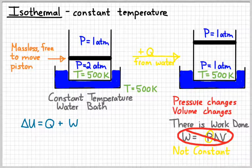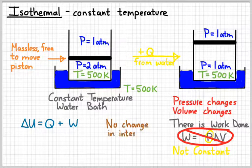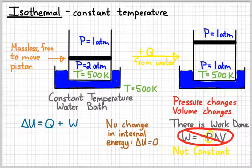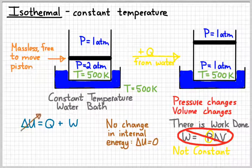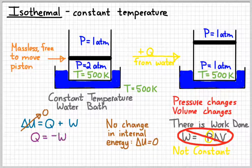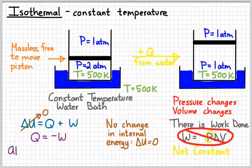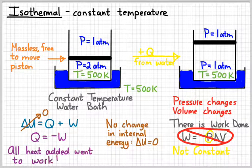In our first law equation, delta U equals Q plus W. Since there's no change in temperature, then there's no change in internal energy. And so delta U is zero. And so Q is equal to negative W. Which means that all the heat that we added went into doing work.